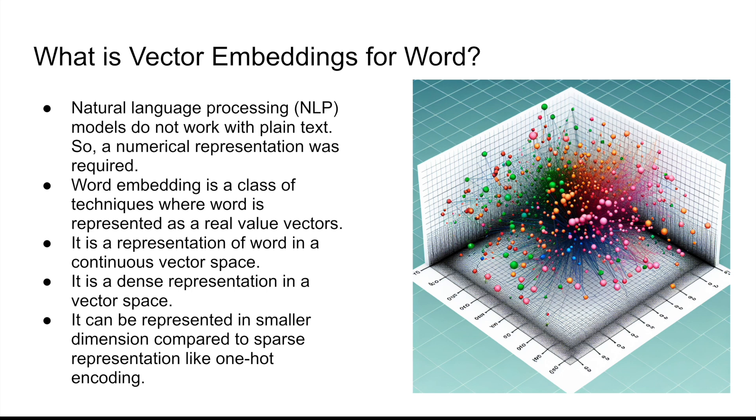Whenever you have a sentence like my name is Bhavesh, it's basically converted into a numeric representation and then the models are able to process it. So the underlying idea is for every text that you want to process, you have to convert that into a numeric representation. So word embeddings is a class of techniques where the word is represented as a real value vector. It's basically a representation of a word in a continuous vector space. So here every point is basically a vector that is represented for some form of a word, and words which are very similar to each other would basically lie in this particular vector space. So this is how basically a text is converted into a number.